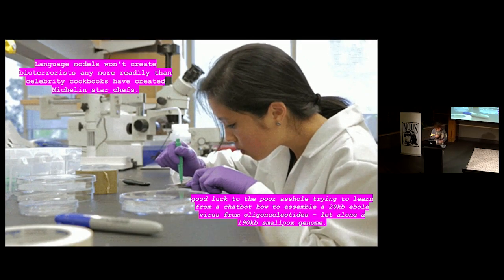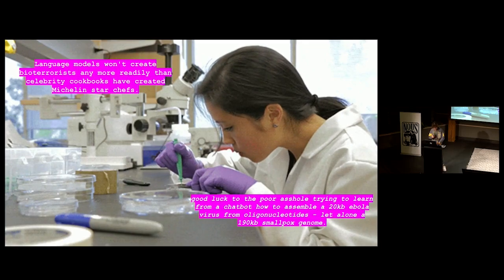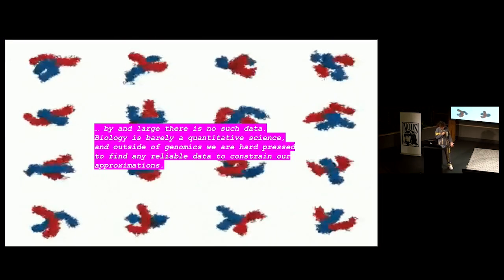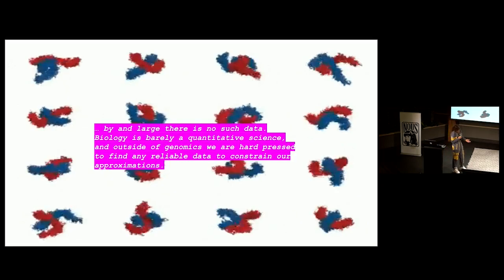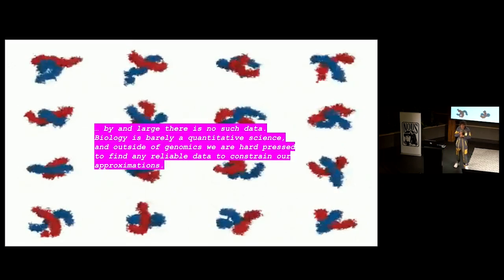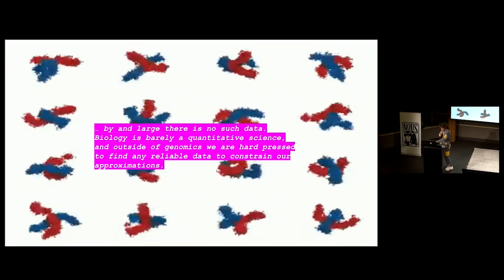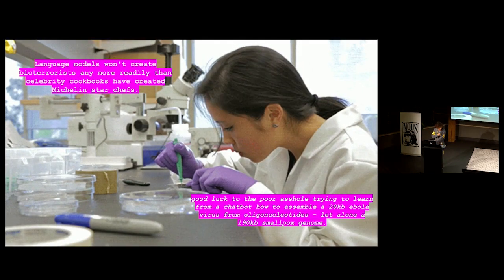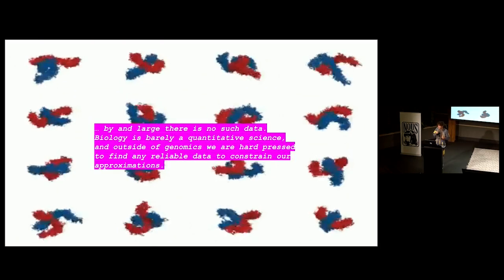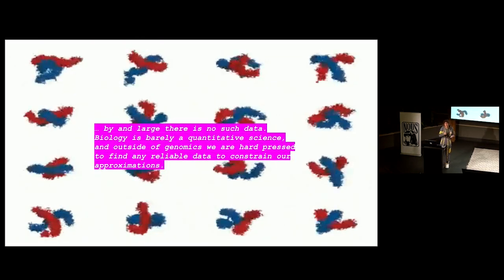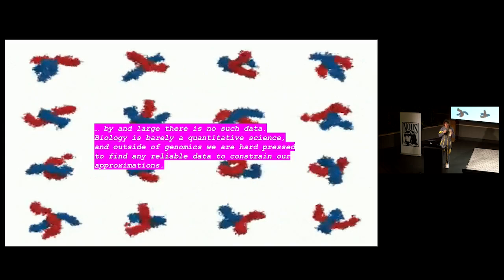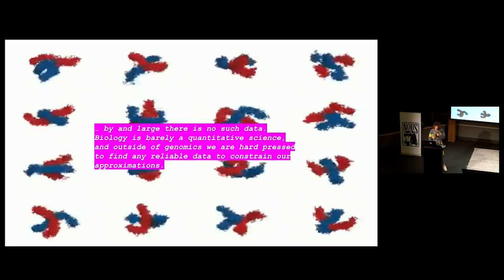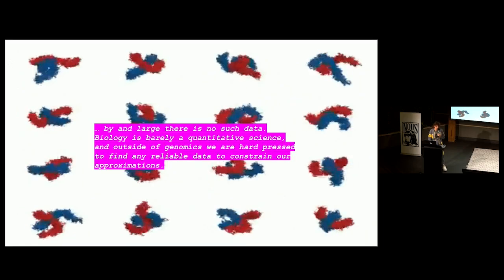An open model is not going to cause any more bioterrorism attacks than a book on bioterrorism would — and those aren't illegal; they're everywhere, go to your library. There is no such data on how to assemble an Ebola virus, let alone a smallpox genome. You can have the instructions, but it doesn't get you anywhere if you don't have the knowledge, the experience, and the resources to do these things — which AI can provide none of in its current state.